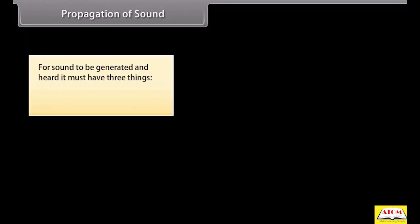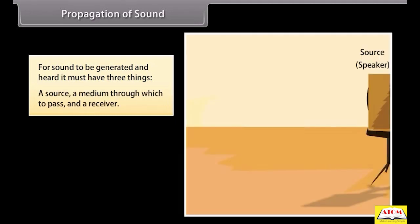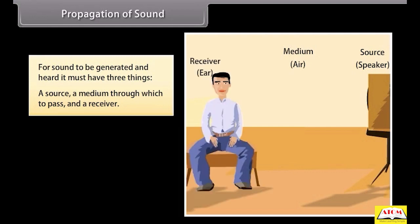Propagation of sound. For sound to be generated and heard, it must have three things. They are: a source, a medium through which to pass, and a receiver. Let us assume the source is the speaker's voice, the medium through which it is transmitted is air, and the receiver is the listener's ear.